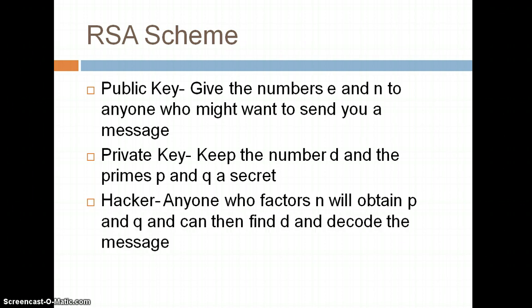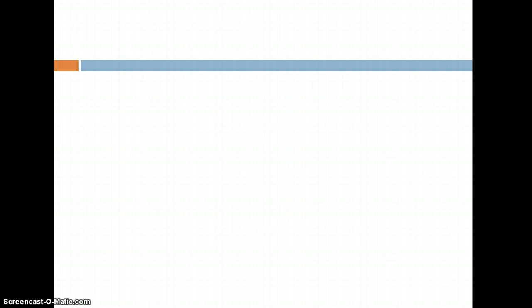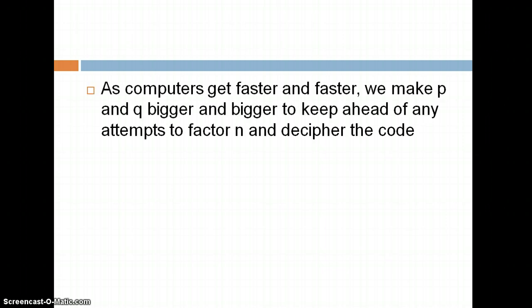Anyone who could factor N, which is the product of P and Q, could then find D and decode your message. So with computers getting faster and faster, we make the primes P and Q bigger and bigger to make it harder to factor N. Right now, I think P and Q are 150 digits long each.